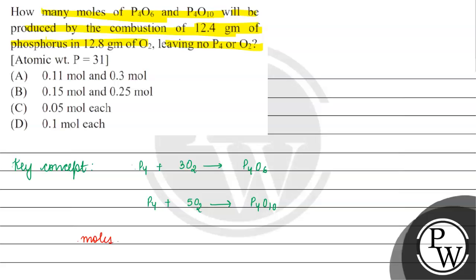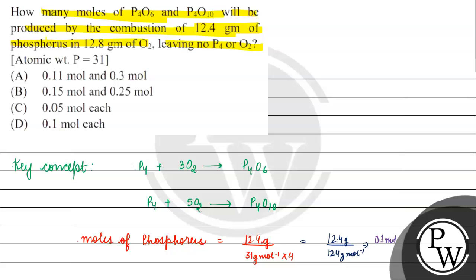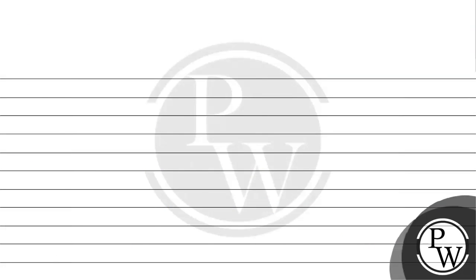To find moles of phosphorus, we take the mass of phosphorus — 12.4 grams — divided by the molar mass of P4, which is 124 grams per mole. For oxygen, we take 12.8 grams divided by its molecular mass of 32 grams per mole.